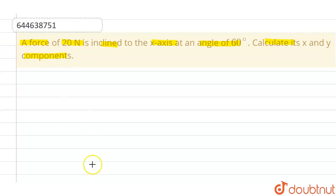So let this be the coordinate system or coordinate axis and a force of 20 newtons. Let's suppose this is the force of 20 newtons which is inclined at an angle of 60 degrees with the x-axis. And this is the x-axis and this one is the y-axis.